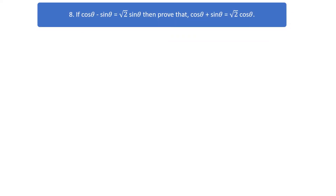Question number 8. If cos θ minus sin θ equals root 2 times sin θ, then prove that cos θ plus sin θ equals root 2 times cos θ.